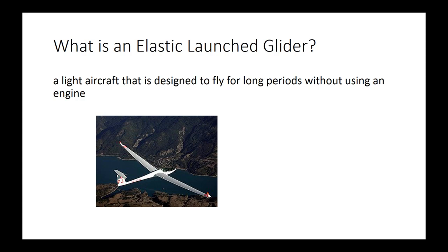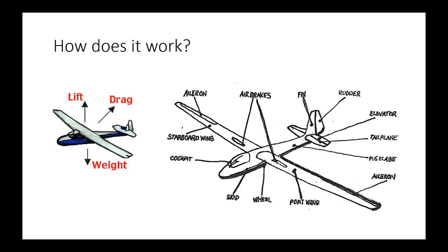So how does it work? There are three main forces that act on the glider: lift, which pushes it up; drag, which pushes it backward; and weight, which pulls it down.